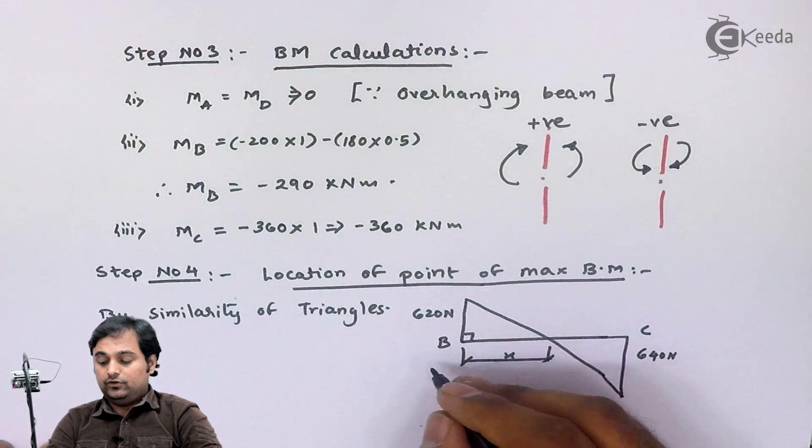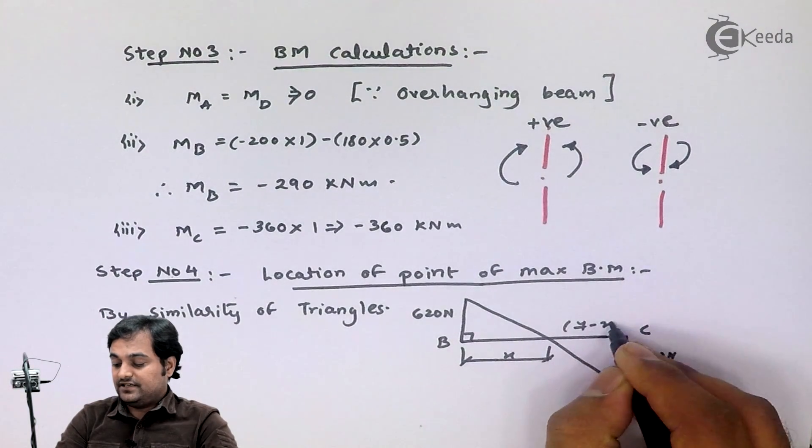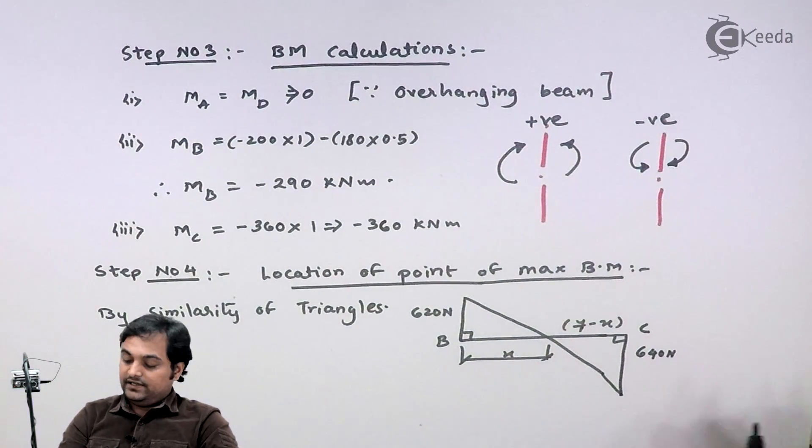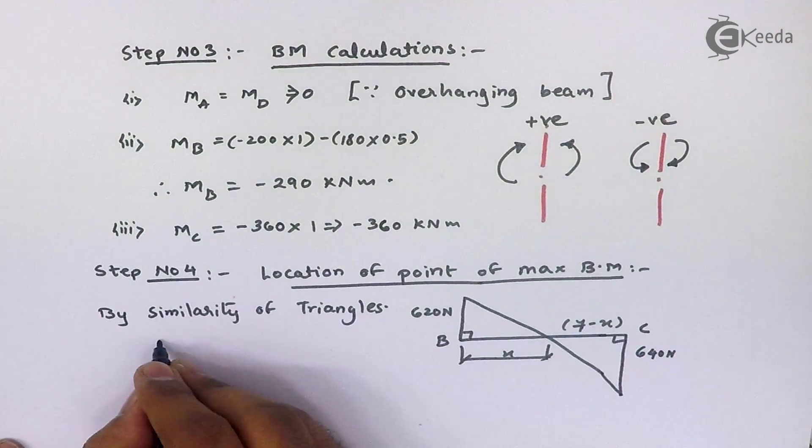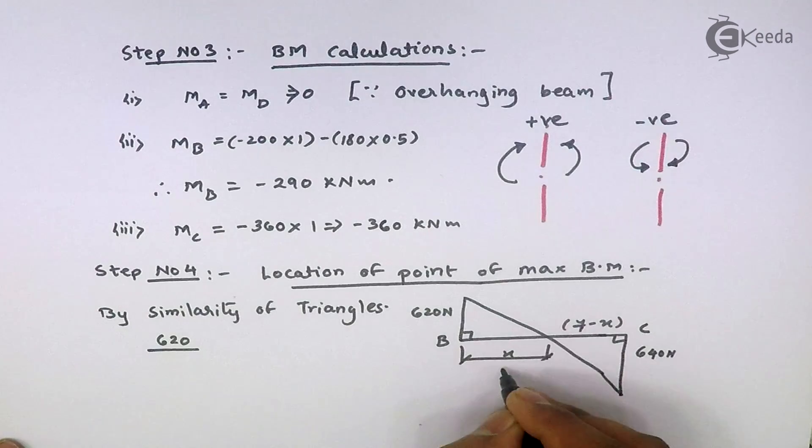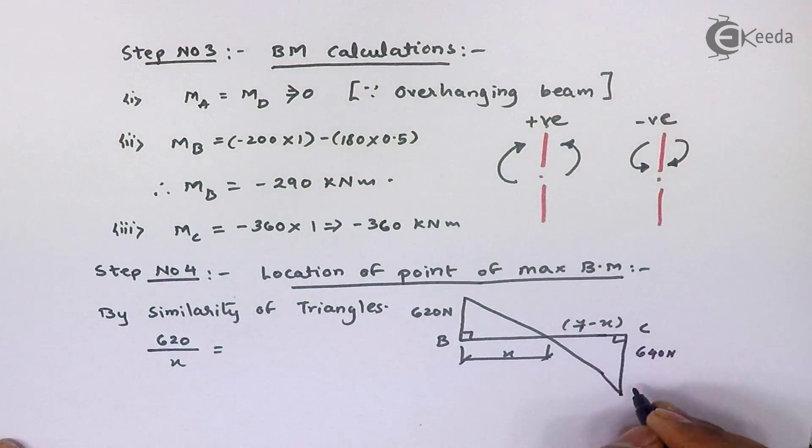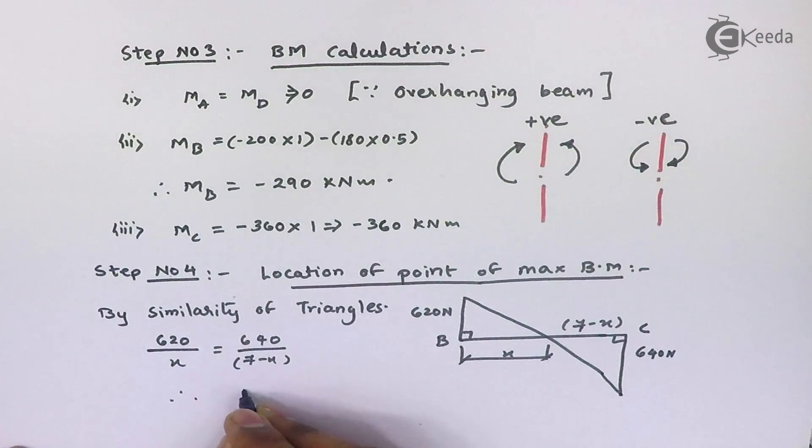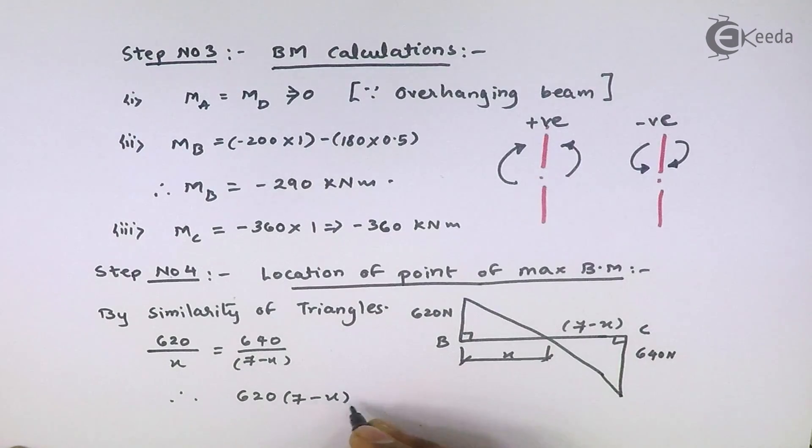The distance is X from point B. This is B to C, so X is the distance of this point where shear force is zero from point B. From point C, the distance is 7 minus X. If I take the height of one triangle, I have to take in the denominator its base. Similarly, the opposite triangle height upon its base.